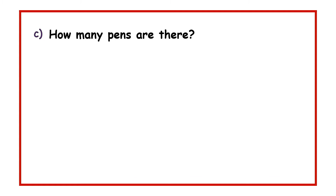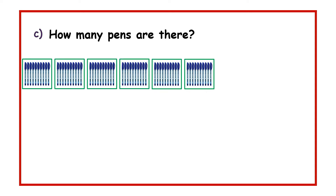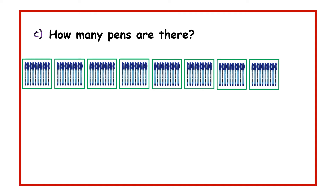For part C, we have got a number of groups. Let's count them all together: 1, 2, 3, 4, 5, 6, 7, 8, and 9. Now each group has got 10 pens. So that is 10, 20, 30, 40.